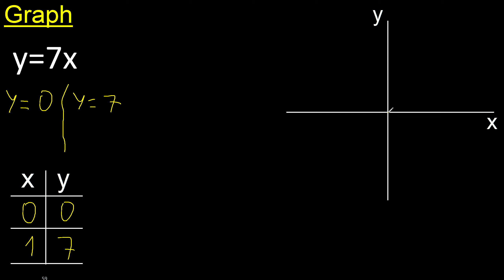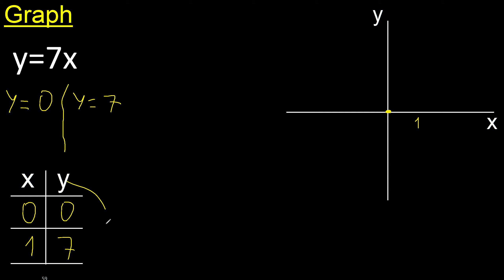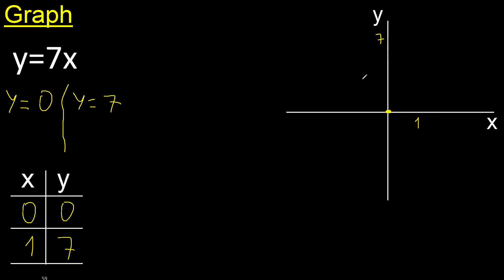0, 0 is here. X is 1 — negative, positive — 1 is here. Y is 7 — negative, positive — 7 is here. The point (1, 7) is here.